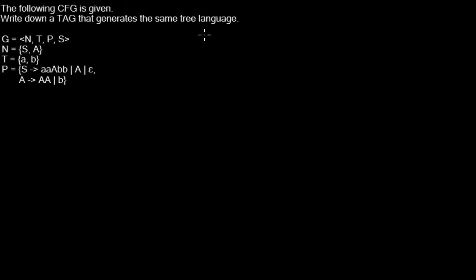So the tree-adjoining grammar for this context-free grammar looks like this. I'm doing this formally. It consists of a set of non-terminals. It's the same set as the one in the context-free grammar. A set of terminals. It's also the same as in the context-free grammar. The start symbol is the same.